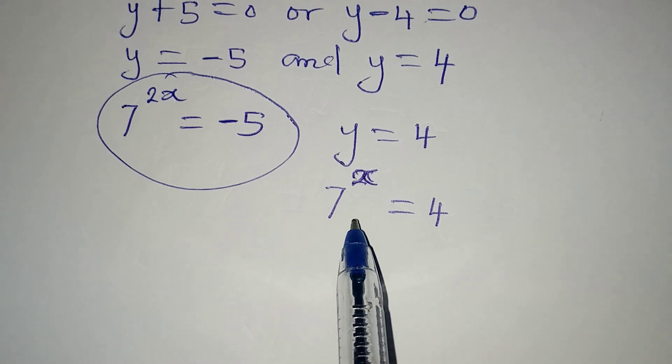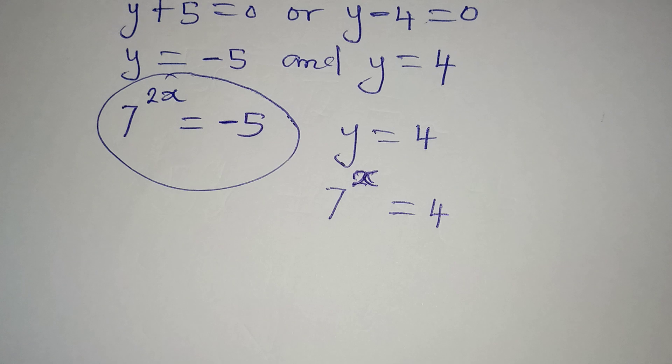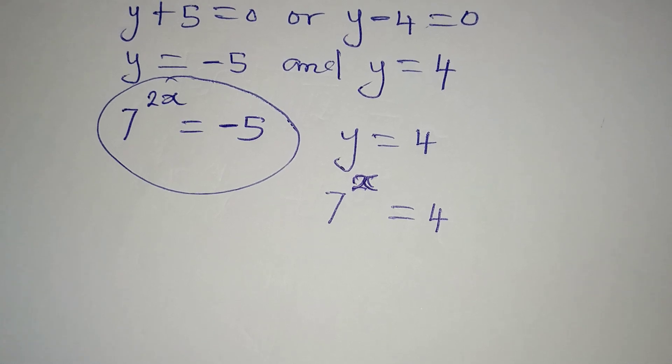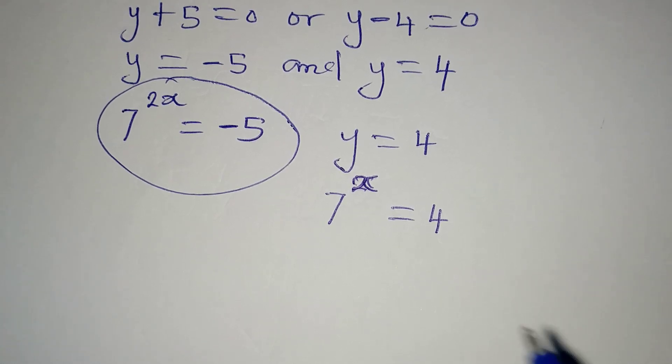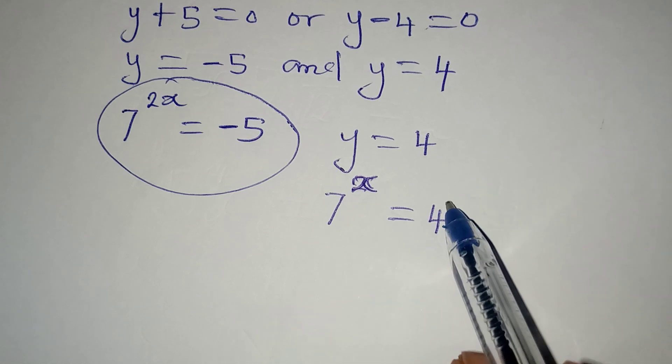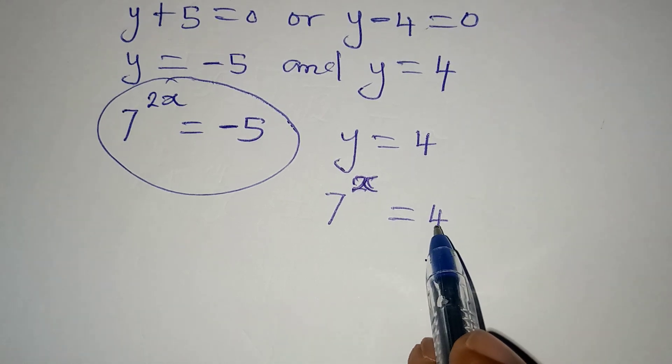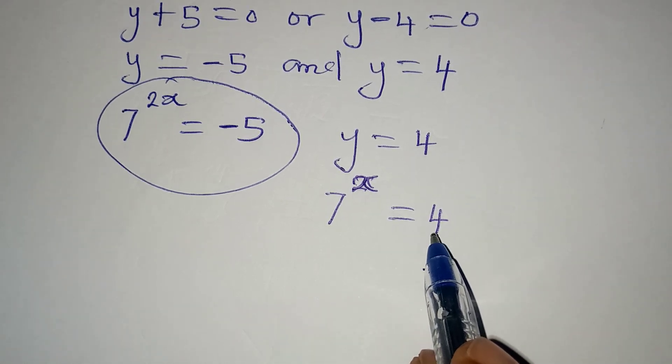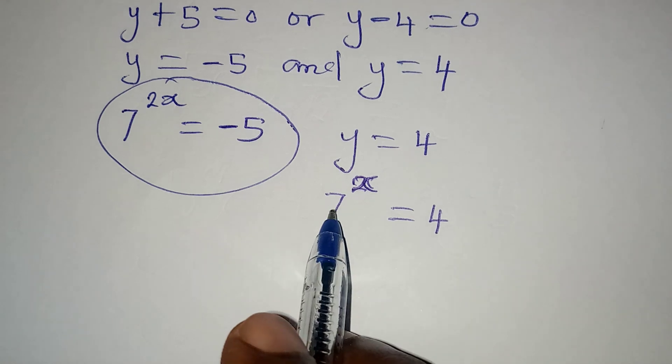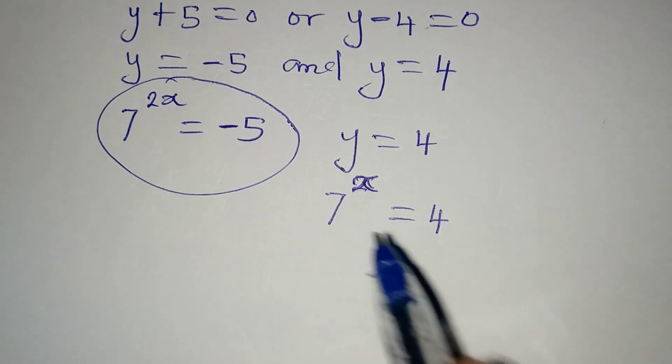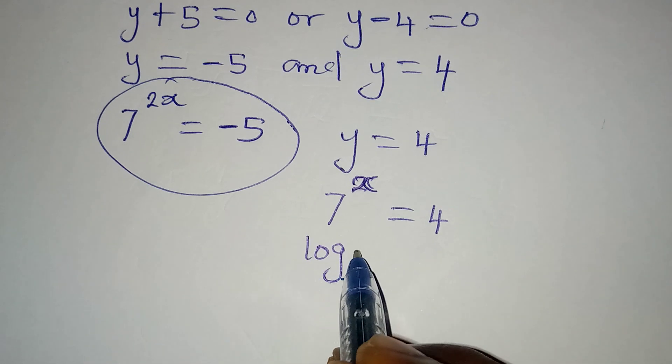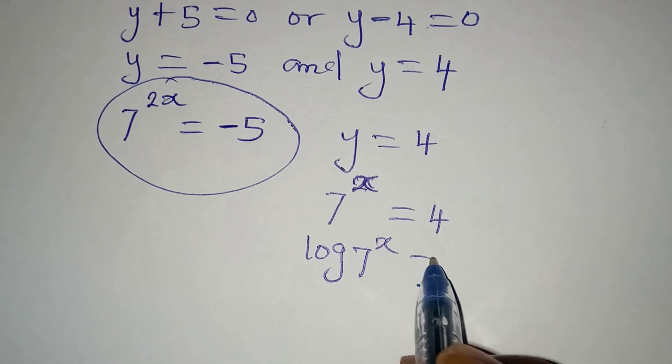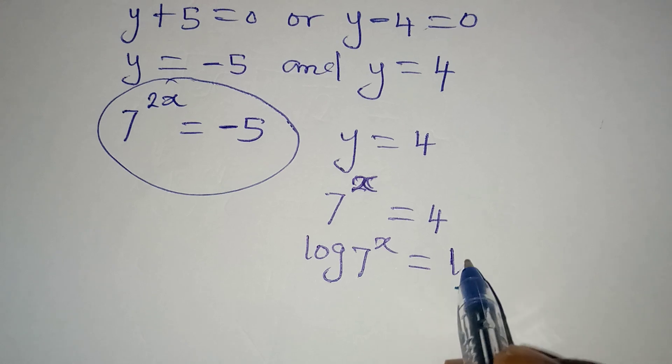Now the next thing I'm going to do is to take the log of both sides. Because if I do not take the logs, I cannot express 4 to have 7 as a base. So I have to take the logs, and then I have log 7 to the power of x to be equal to log 4.